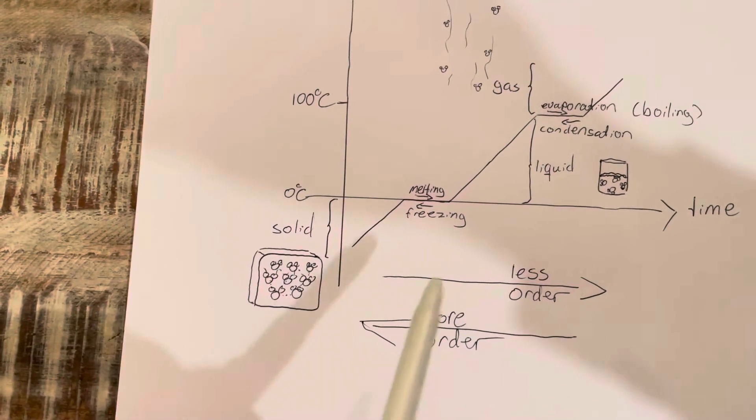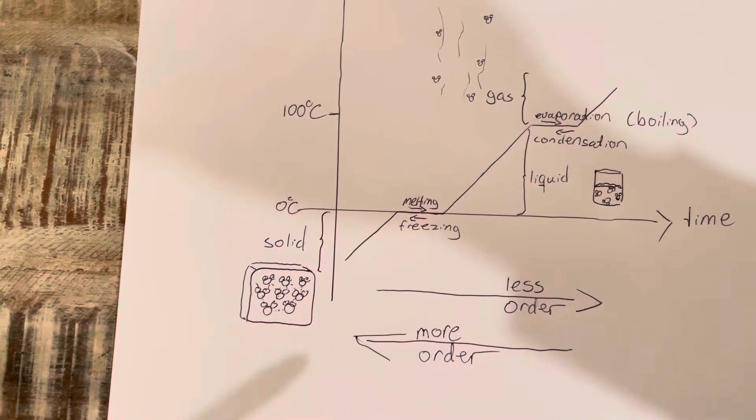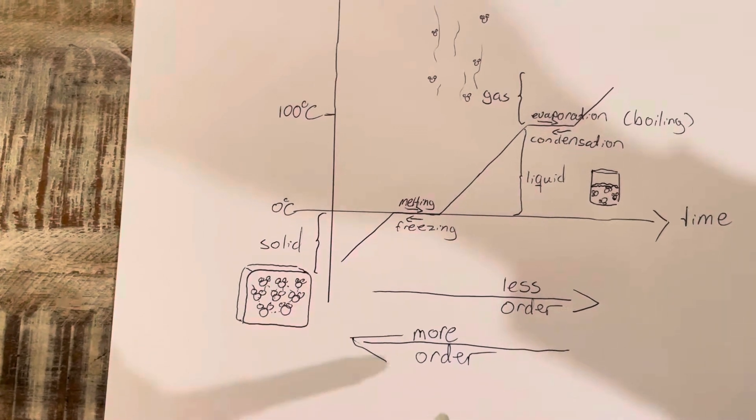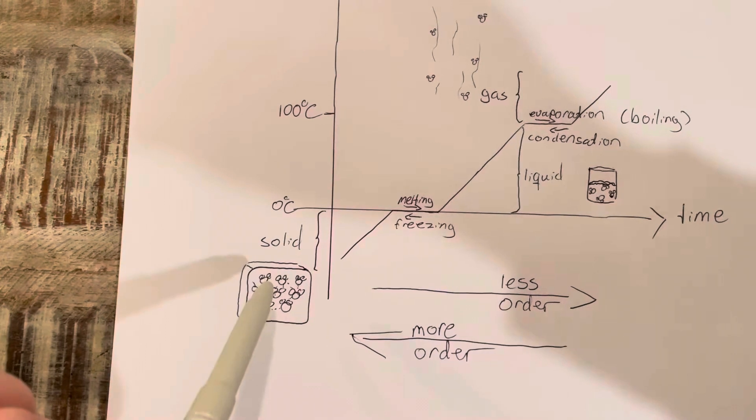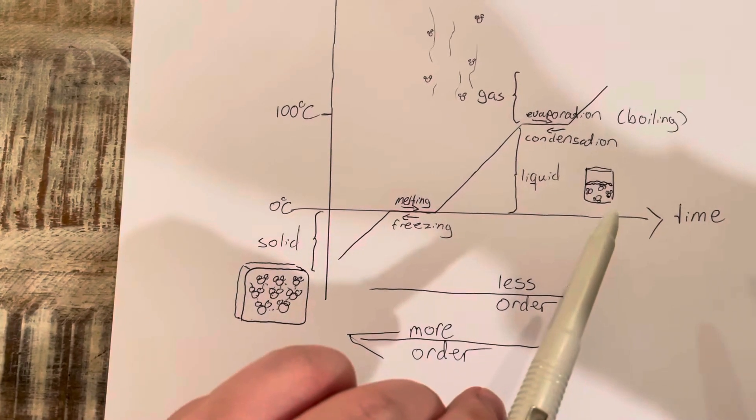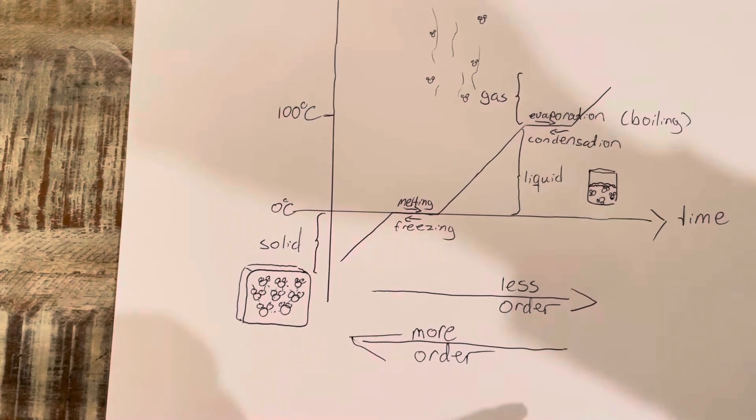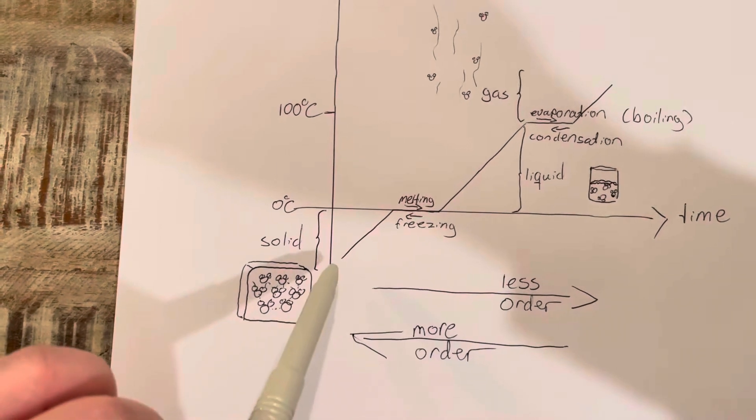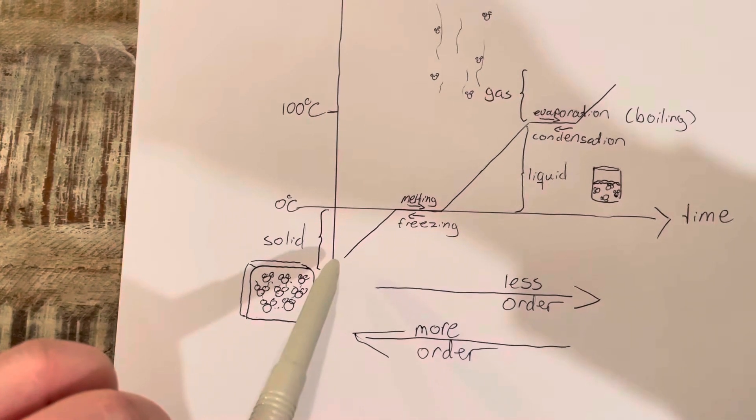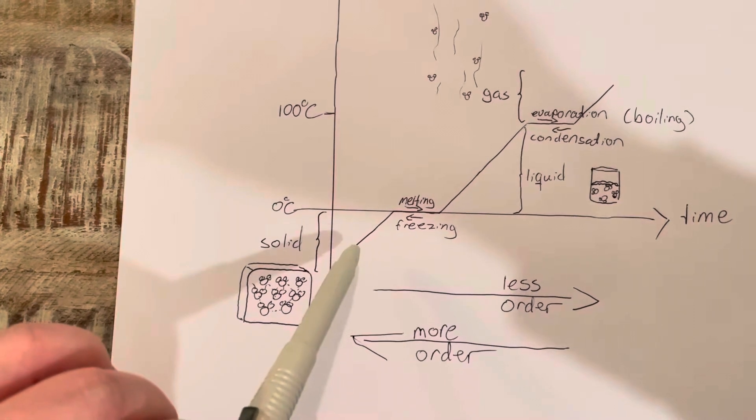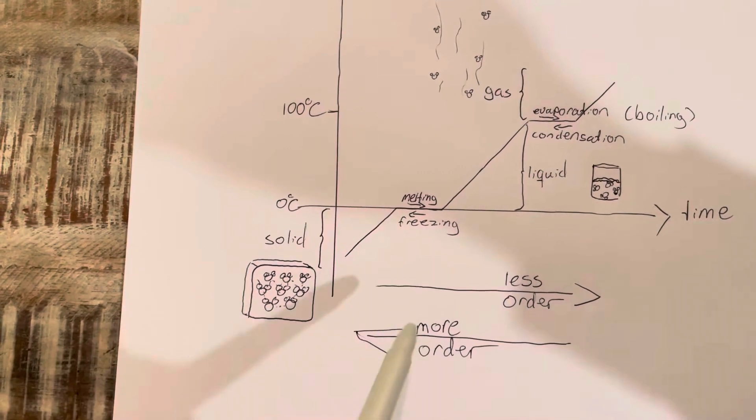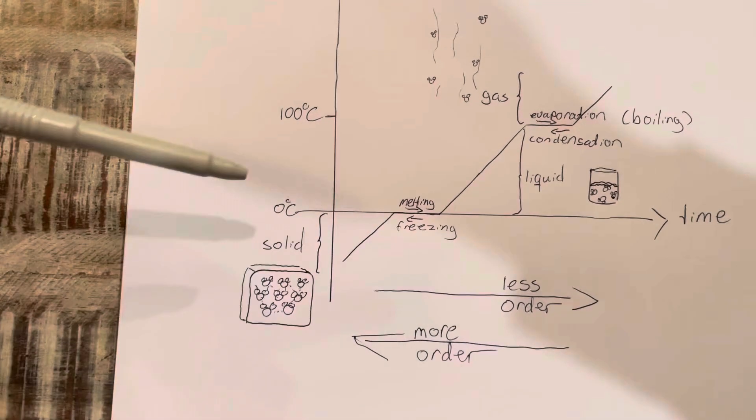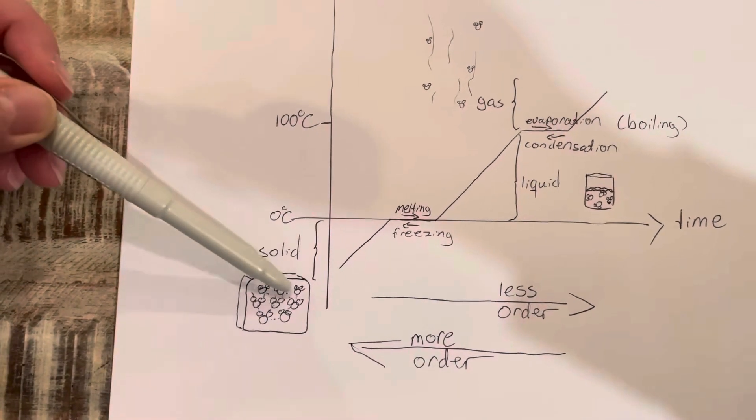You'll see that the curve flattens because the energy is now going to change solid to liquid. It takes energy to make the molecules move faster, vibrate faster, and when it finally gets to zero degrees Celsius, the energy is being used to separate these bonds.